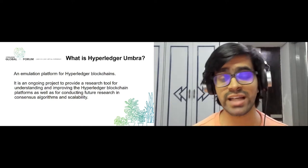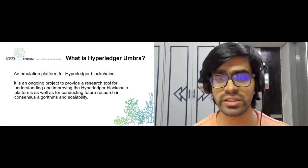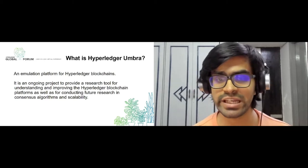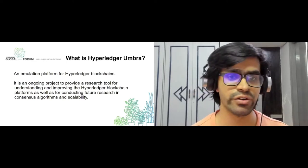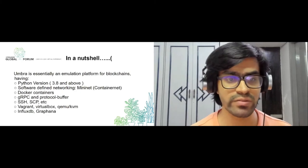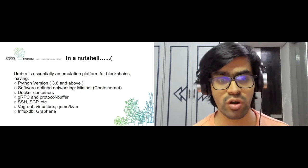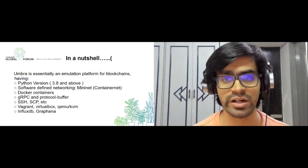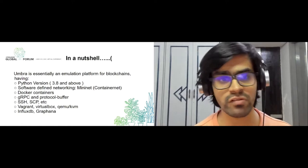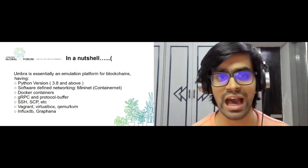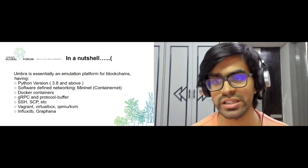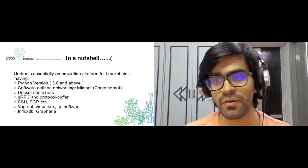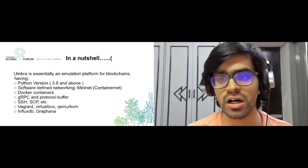In a nutshell, Hyperledger Umbra is an emulation platform for different types of blockchains with support for Python 3.8 and above. For networking, we are essentially using Mininet and Docker containers — any blockchain network will run in a dockerized container. We also use gRPC and Protocol Buffers, Vagrant, VirtualBox, InfluxDB for the database, and Grafana for monitoring scalability. It combines all of this together under one package, available in the Hyperledger Labs.